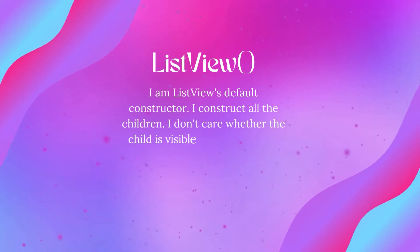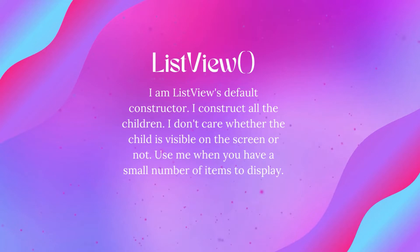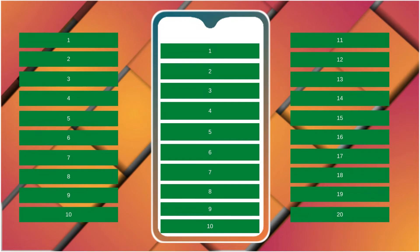We use the default constructor to create the list view when we have a small number of children, because it constructs even those children that are invisible to the user — meaning the user has not yet scrolled the list to view those items. For example, we have 20 items to display and only 10 items are visible on the screen, and the rest will be shown when the user scrolls.